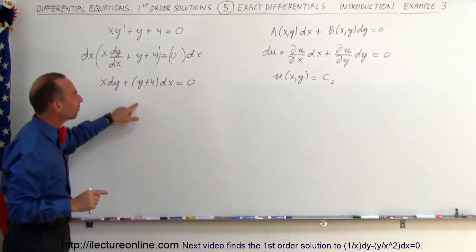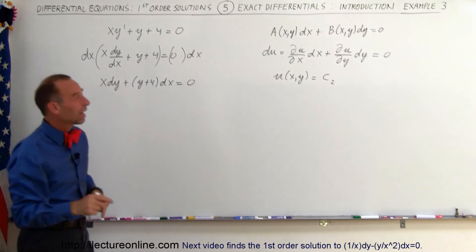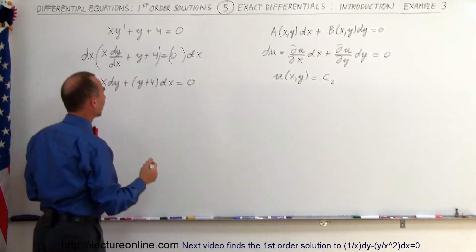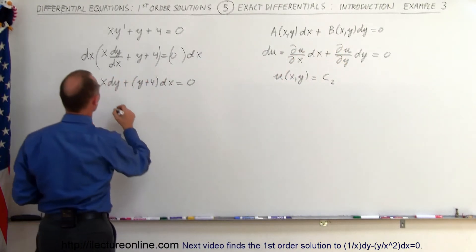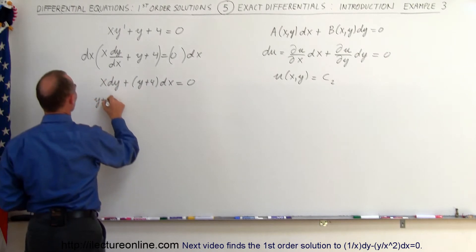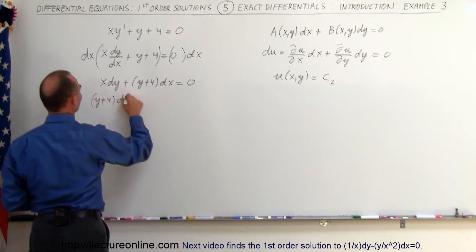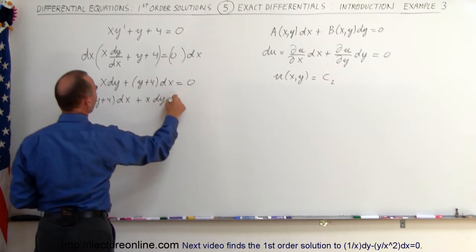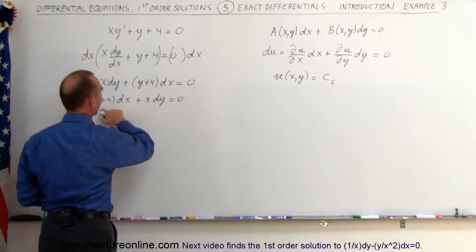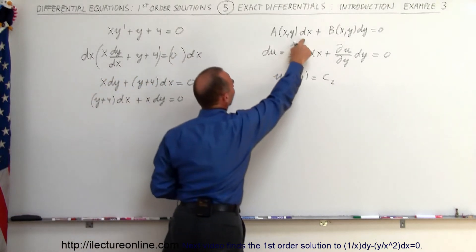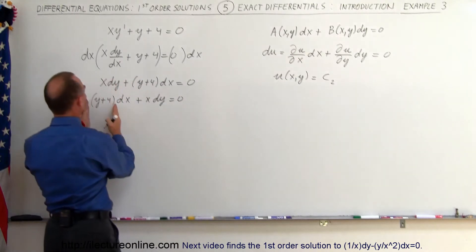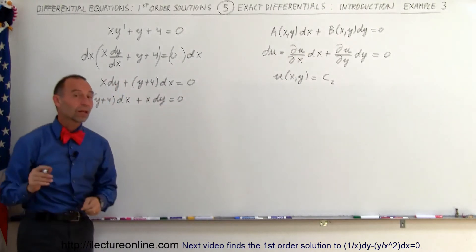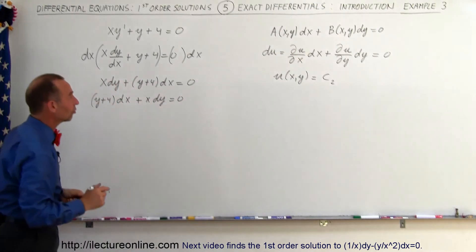We're not quite there yet because we have dx first and then dy. So I'll interchange those and write this as the quantity (y plus 4) times dx plus x times dy is equal to 0. Now we have the exact same format as the general form, with A being (y plus 4) and B being equal to x.